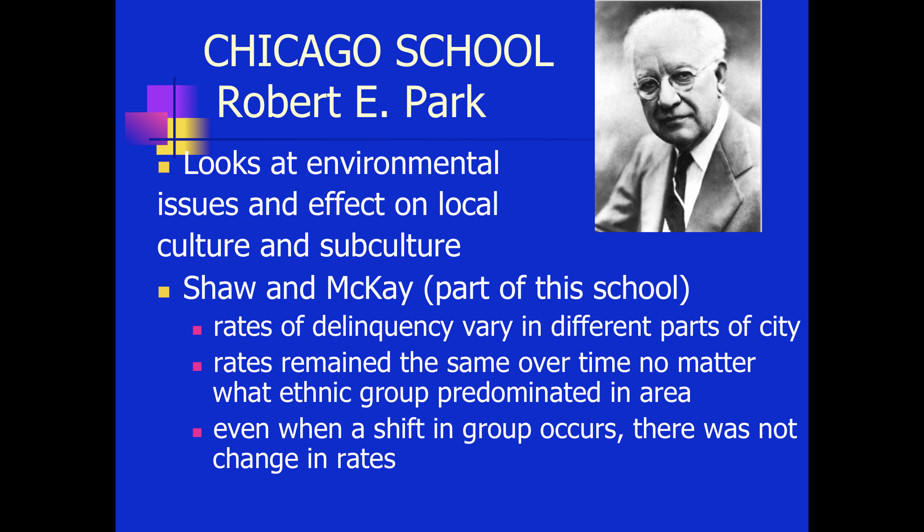In creating this framework of thinking about social structure theories, I want to introduce you to Robert E. Park. He was part of the Chicago School, which was a very influential — and perhaps the most singularly influential — area of sociological study in the United States during the first half of the 20th century. Robert E. Park created a framework for understanding how the physical environment of urban areas had an effect on the local culture and subcultures of different groups.